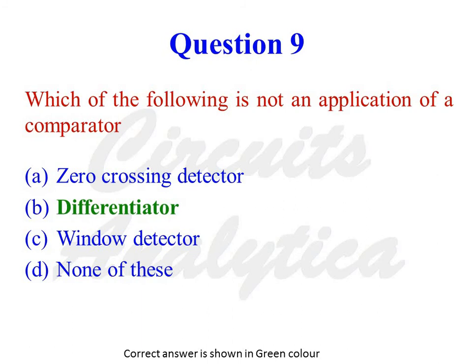Which of the following is not an application of a comparator? The options are: zero-crossing detector, differentiator, window detector, or none of these. The correct answer is differentiator. In a zero-crossing detector and window detector, there is no feedback between input and output — meaning the op-amp is connected as a comparator in those configurations.